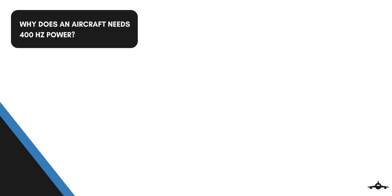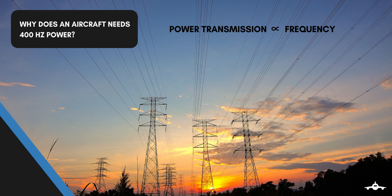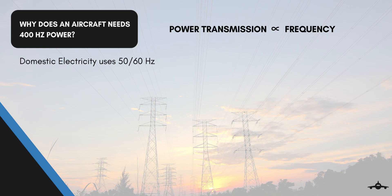So why does an aircraft need a 400 Hz power supply? The answer lies in the relationship between power transmission and electrical frequency. Domestic electricity uses 50 or 60 Hz power supply. Power plants are built in remote areas from where power is supplied to homes through transmission cable networks. Using low frequency power supply results in low transmission losses, which is an advantage of low frequency.